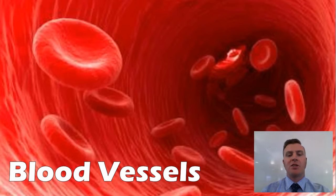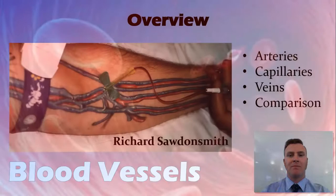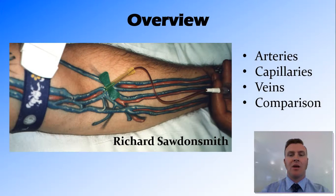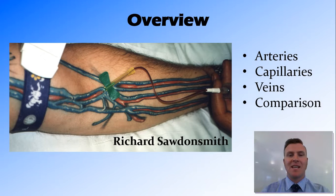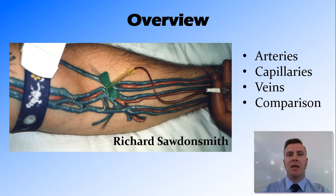Hi guys, in this video we're going to look at blood vessels found within the body. We're going to talk about the three main blood vessels: arteries, capillaries, and veins. And then we're going to look at a comparison between arteries and veins.